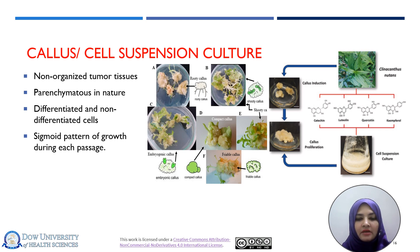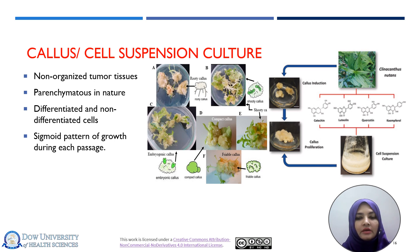Cell suspension cultures have specific requirements: they are placed on a shaker in liquid medium, where proper agitation provides gaseous exchange for cell growth and proliferation. The cells follow a specific sigmoid pattern of growth such as lag phase, log phase, stationary phase, and decline phase. This type of culture can be used for enhancement of plant secondary metabolites and for enzyme system studies — we call it biotransformation technique.